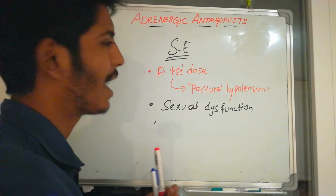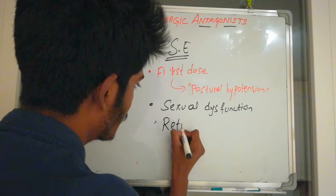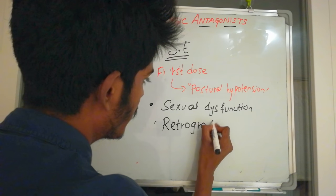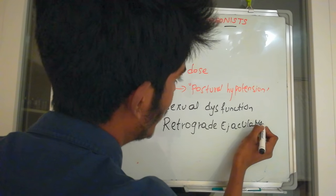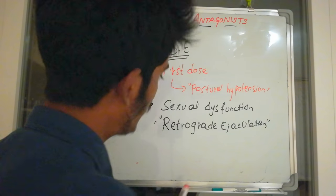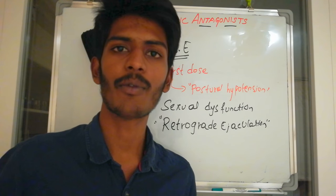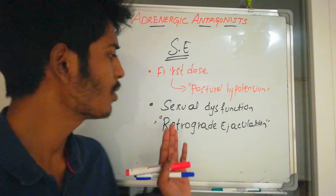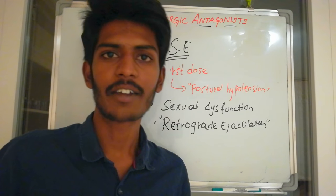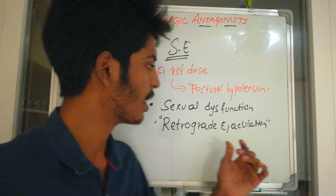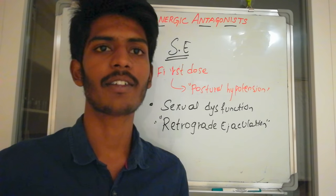Apart from postural hypotension, patients can experience sexual dysfunction, headache, dizziness, and other non-specific side effects. One more specific side effect is retrograde ejaculation. Alpha 1 receptors are present not only in the urinary bladder sphincter but also in the ducts involved in the ejaculatory process. When these receptors are blocked, there is impaired contraction of those ducts, causing retrograde ejaculation.